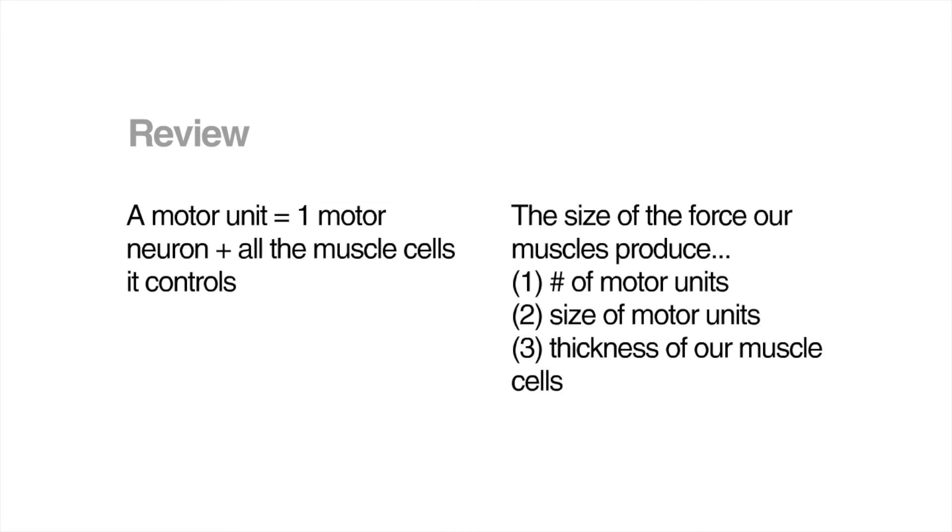Okay, so let's review. A motor unit is made of a motor neuron and all the muscle cells it controls. Three factors can influence the size of the force that our muscles produce: the number of motor units involved, the size of the motor units involved, and the thickness of our muscle cells.